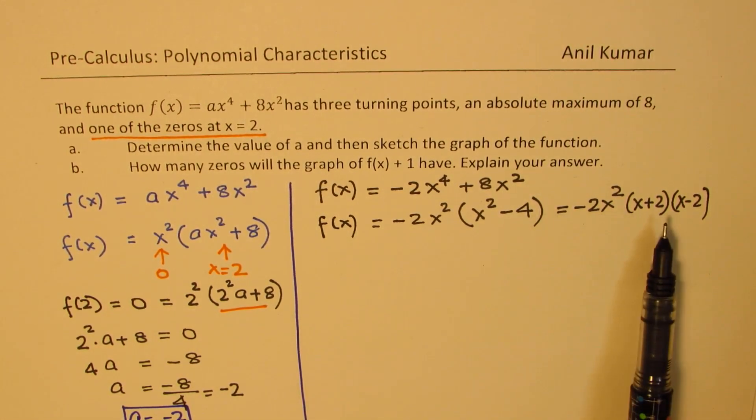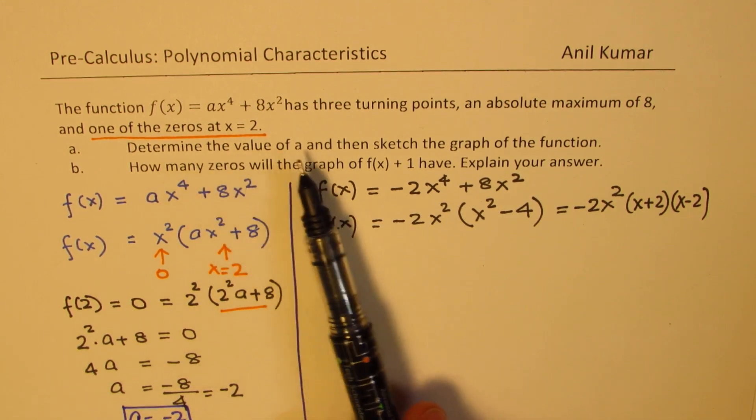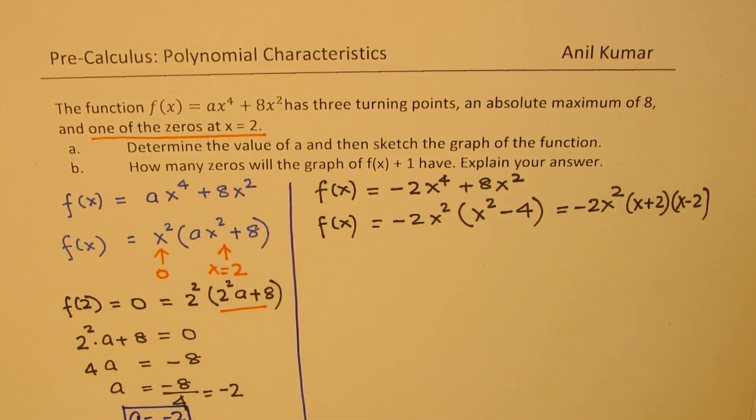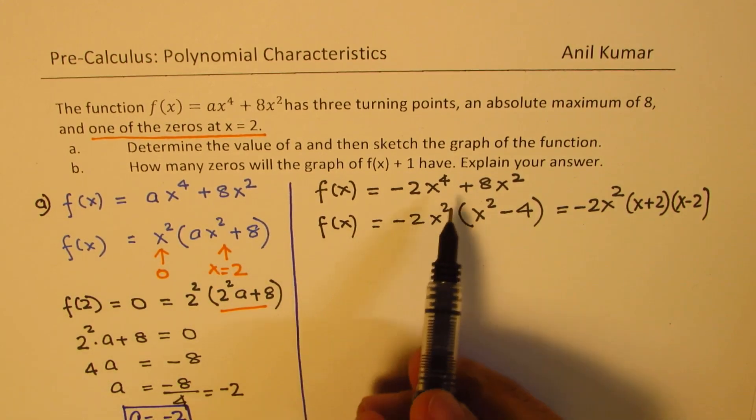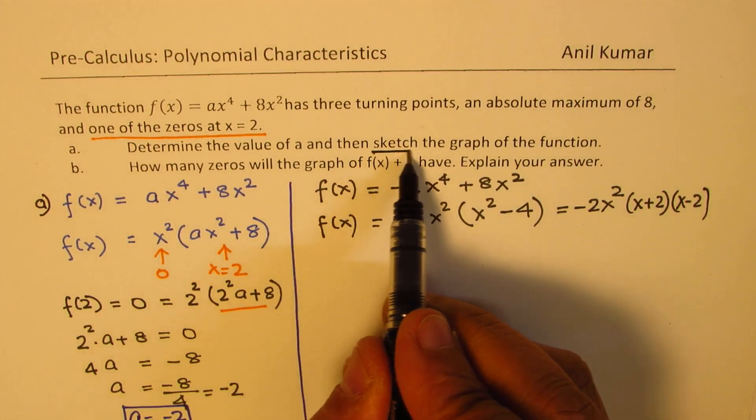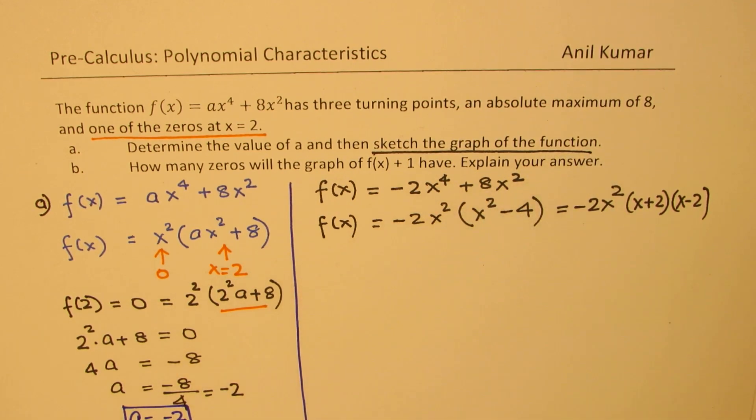That is the factored form. We have found the value of a, which is right there. That is part A for us. Now let us try to sketch the graph of this function.